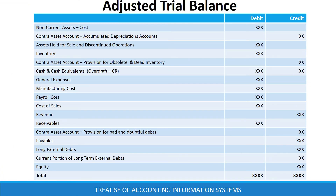After making end of year adjustments, the entity prepares an adjusted trial balance. The adjusted trial balance shows the contra-asset accounts as well as reclassified assets and liabilities. The adjusted trial balance is then used to prepare financial statements for external reporting, ensuring that the entity complies with the financial reporting standard adopted by it.